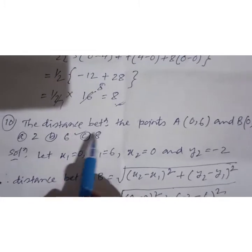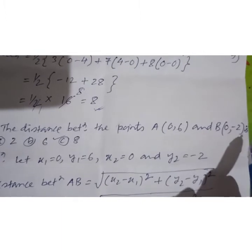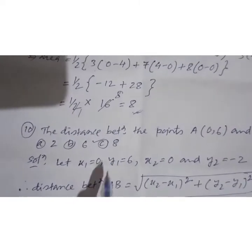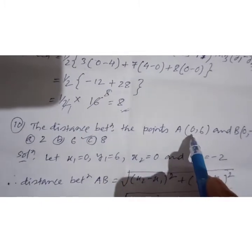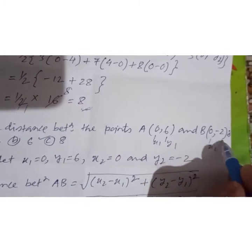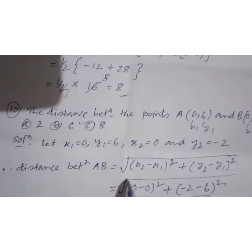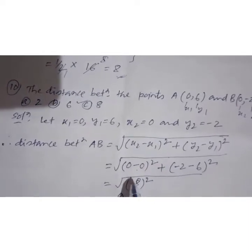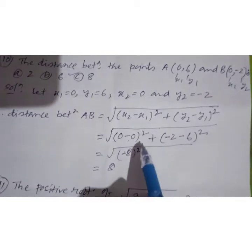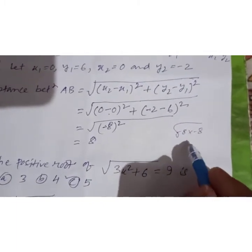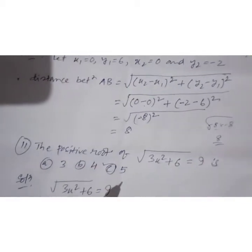Next: the distance between the points A(0, 6) and B(0, -2). Using the distance formula with x1=0, y1=6, x2=0, y2=-2: the x-terms cancel out since both are zero. We get the difference in y-values: 6 minus (-2) equals 8. Squaring gives 64, and taking the square root gives 8. The answer is 8.